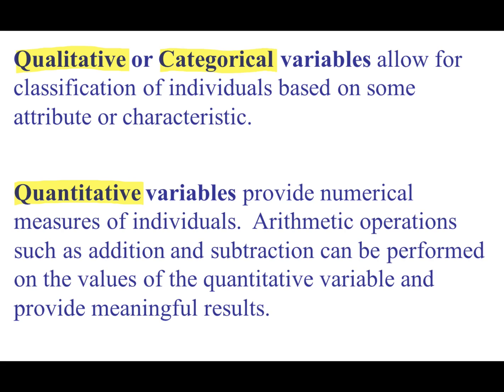The book's definition is they provide numerical measures of individuals, so they're numbers. Importantly, you can perform arithmetic operations on them, like addition and subtraction. What are things that we can measure that if we added or subtracted them, we would get something that was meaningful? Say height or weight or miles per gallon. These are all quantities that are quantitative variables.